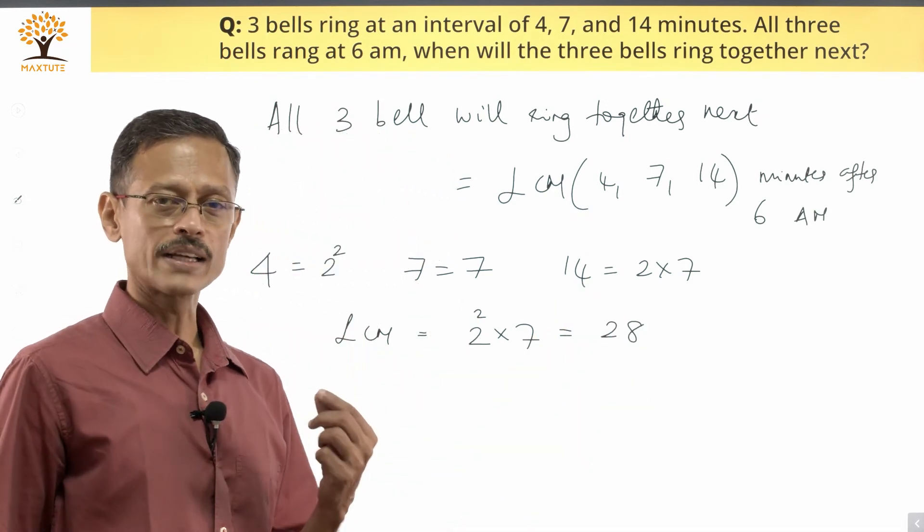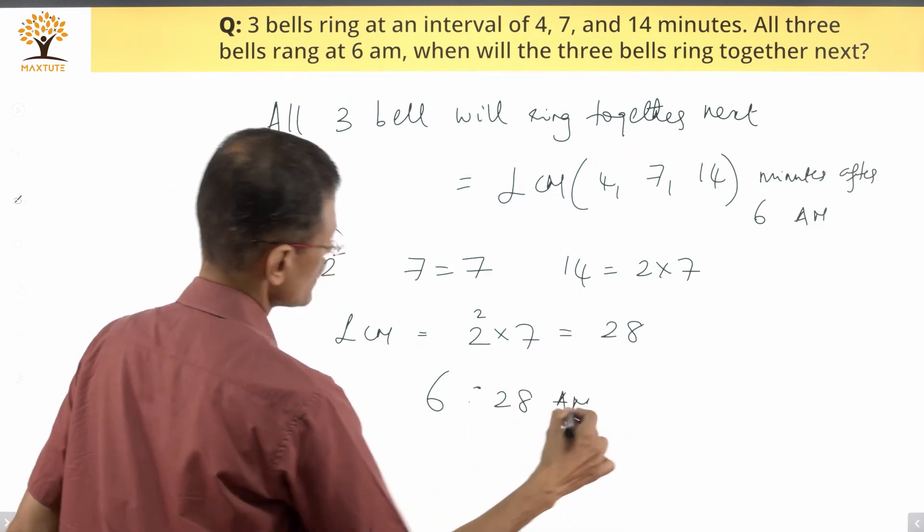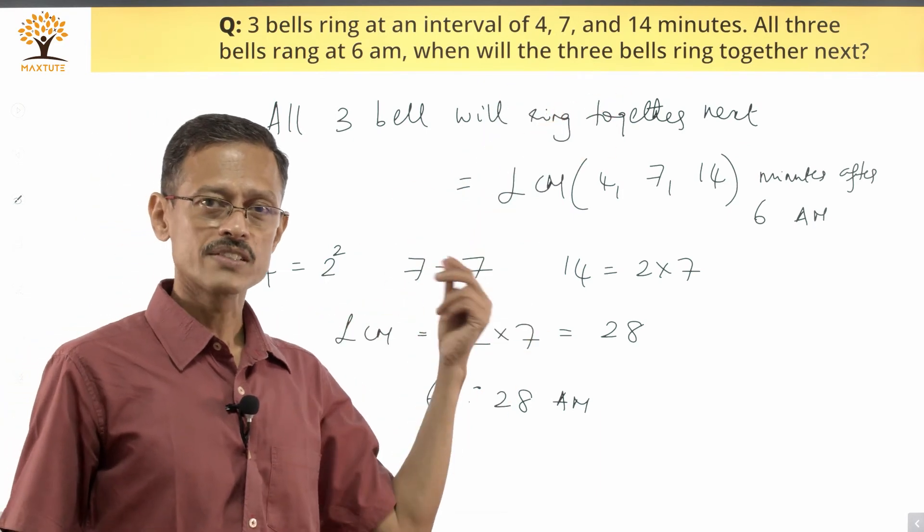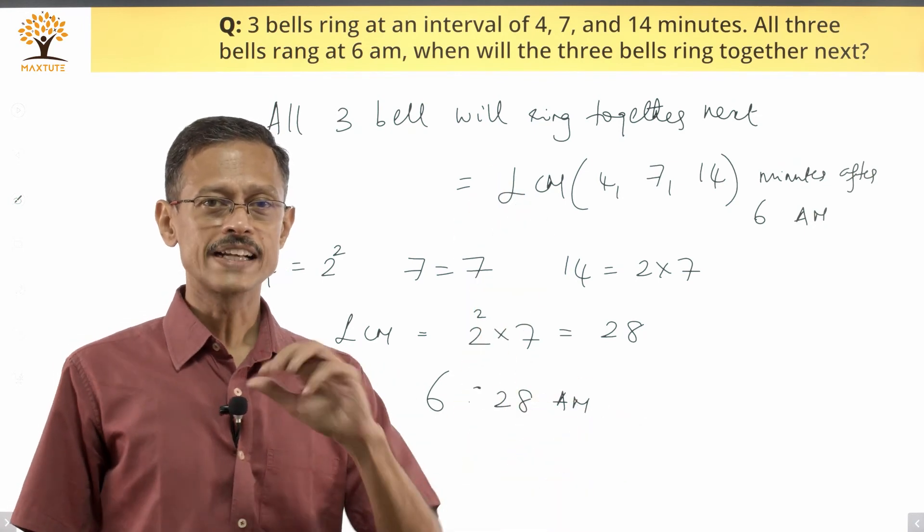The next time they'll ring together is going to be 6 o'clock plus 28, which is 6:28 am. So step one, saying that it'll ring together at the LCM. Step two is computing the LCM. Step three is writing the time, which is 6:28 am. Write these three steps, you'll get two marks.